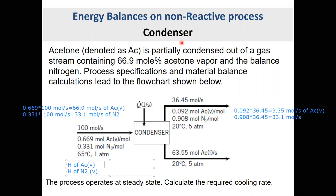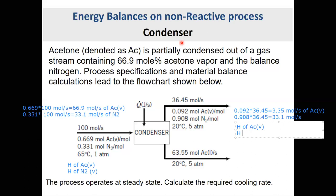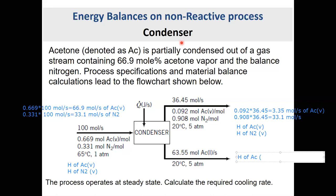Enthalpy depends on temperature and pressure. For the inlet at 65°C and 1 atmosphere, we need the enthalpy of acetone in vapor and nitrogen in vapor. For the outlet, we need enthalpy of acetone in vapor, nitrogen in vapor, and acetone in liquid phase. By knowing these five enthalpy values, we can calculate delta H as the sum of all outlet enthalpies minus the sum of all inlet enthalpies.